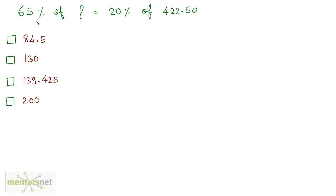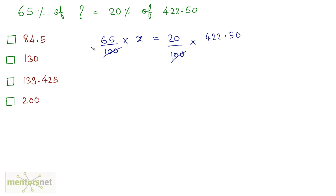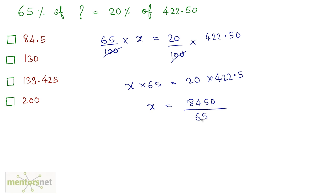The fourth question: 65% of what is equal to 20% of 422.50? So 65 upon 100 times x is equal to 20 upon 100 times 422.50. The 100s cancel out, giving x times 65 is equal to 20 times 422.5. So x is equal to 20 times 422.5, which is 8450, divided by 65. Therefore x is equal to 8450 divided by 65, which equals 130. So the correct option is option number 2.